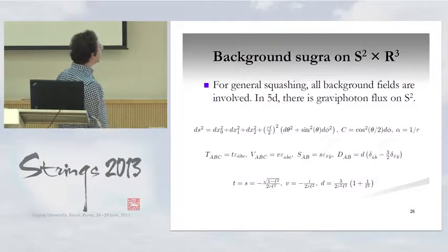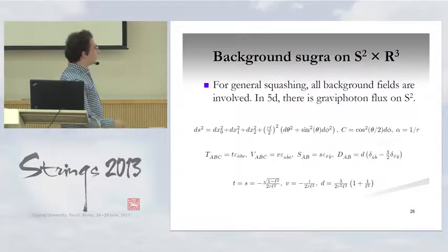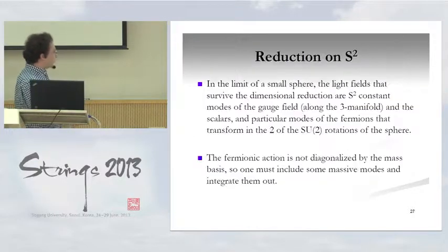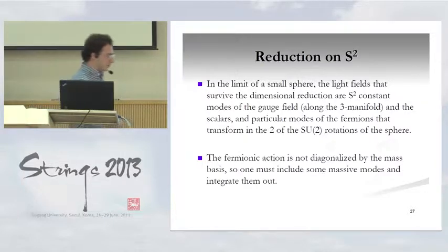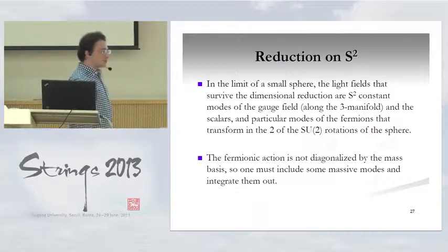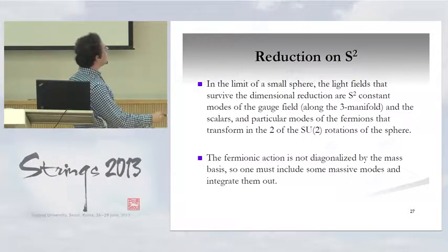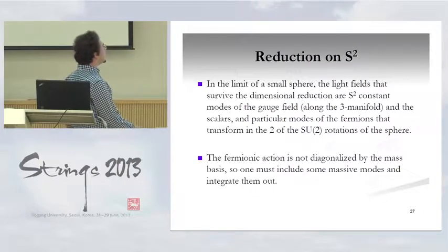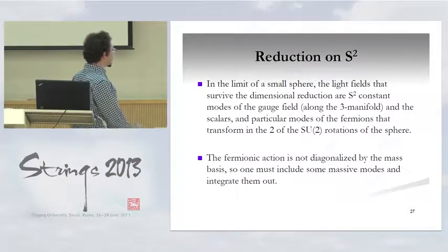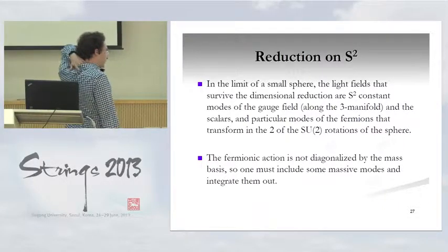The answer for all parameters is completely determined by preserving supersymmetry and depends on the squashing parameter L, where L=1 is the round sphere. Once one has that, you plug it into the 5D Yang-Mills Lagrangian coupled to those background fields and dimensionally reduce on the 2-sphere — completely straightforward because you have this weakly coupled Lagrangian. The light fields that survive this dimensional reduction are: modes of the gauge field with legs along the 3-manifold that are constant on the 2-sphere, constant modes of the scalar, and modes of the fermions. There are no 1-cycles in S², so nothing else from the gauge fields. One non-trivial thing is that the fermion action isn't diagonal in the mass basis — you can't just truncate to massless fermions.